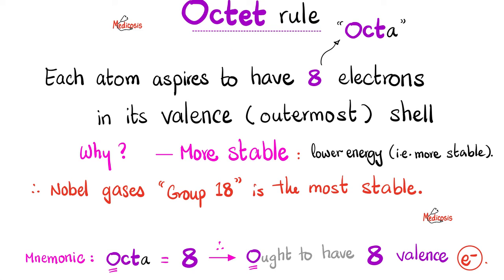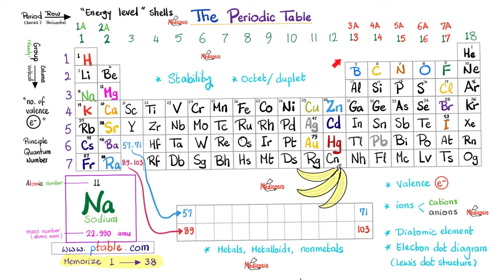Let's start by the octet rule. Octet means octa, eight. Each atom aspires to have eight electrons. So the goal is to reach eight electrons in my outer or valence shell. Let's look at this periodic table for instance. Here is fluorine. How many electrons in the outermost shell? Seven. And I am aspiring to the octet. I want to have eight valence electrons. So fluorine will tend to gain an electron so that it becomes like neon with eight electrons in the valence shell. Octet.